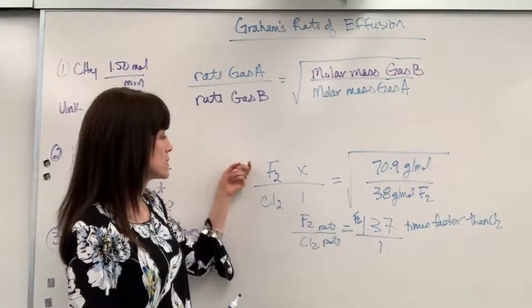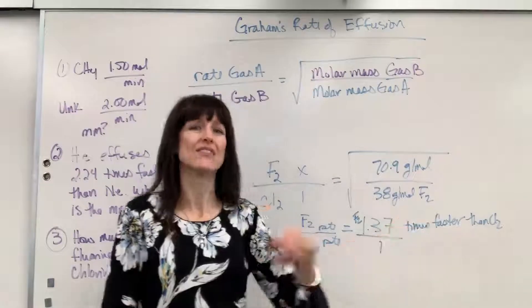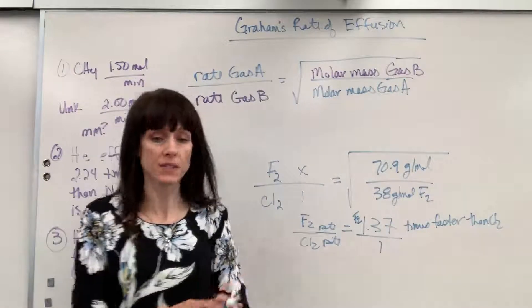Now, if it's greater than 1, that means the gas in the numerator is faster. If it's less than 1, like if I got, this is what this would be. Let me give this to you.